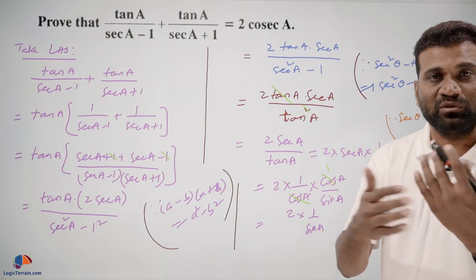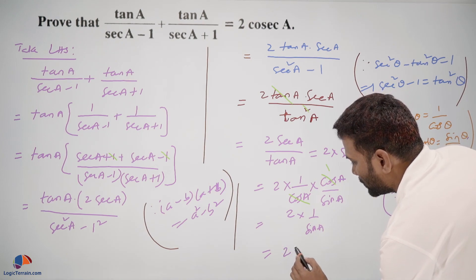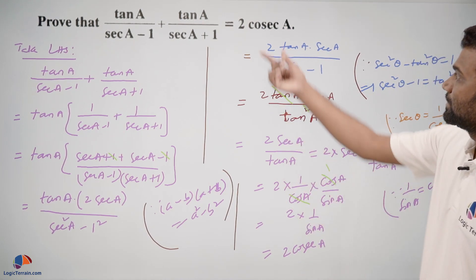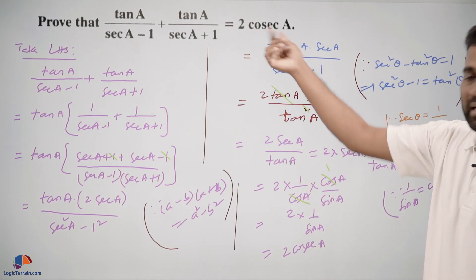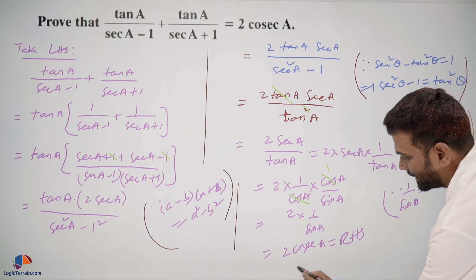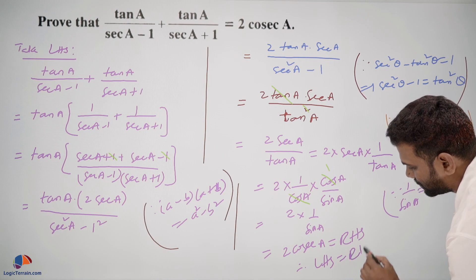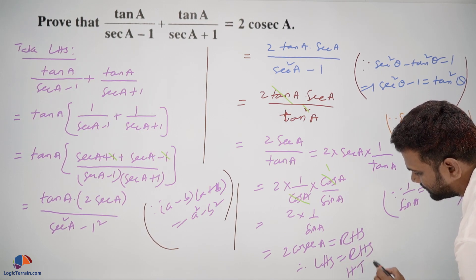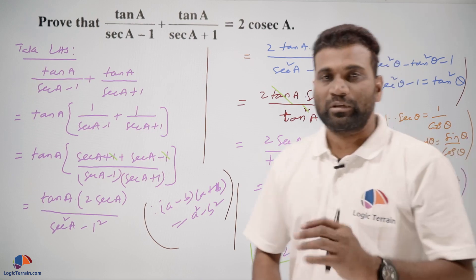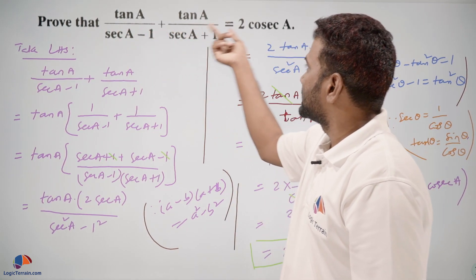Since cos and cos are reciprocal and cancel, this becomes 2 cosecant A, which is our required RHS. Therefore LHS equals RHS, hence the proof is complete.